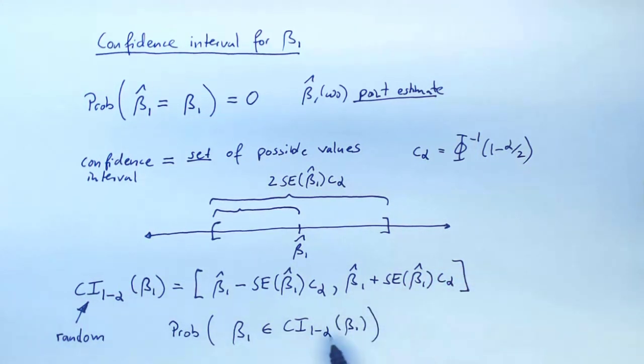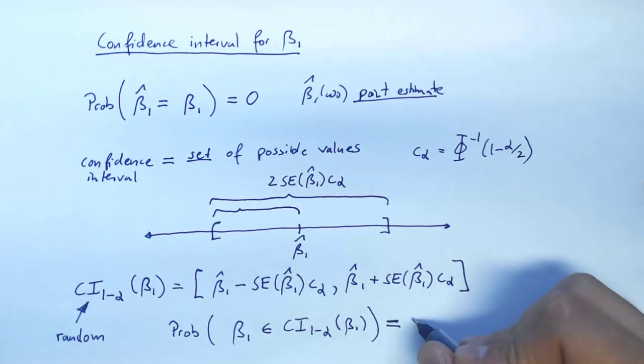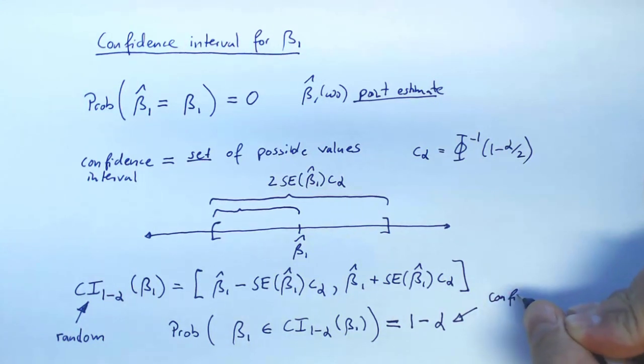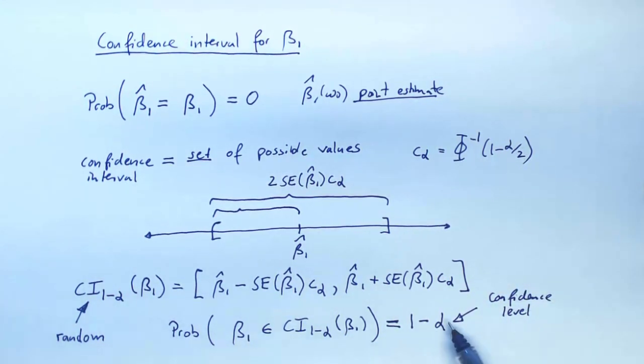And this probability is actually given to be one minus alpha. This is called the confidence level. So again, we think of alpha as a small number so that we're covering the truth with probability fairly close to one.